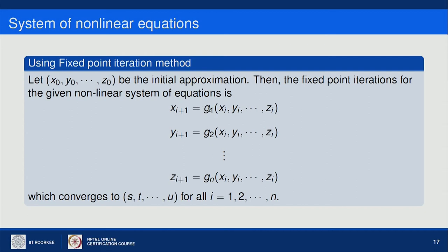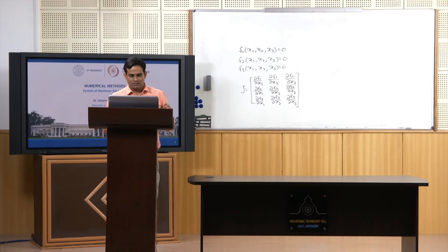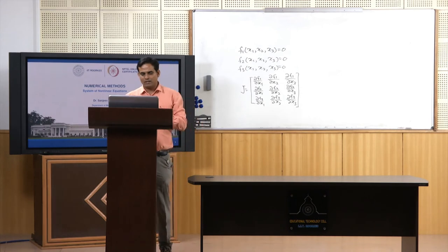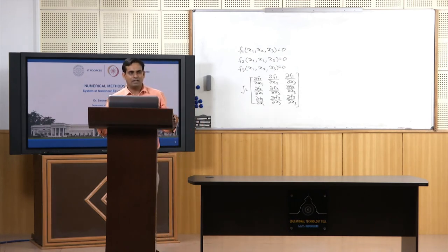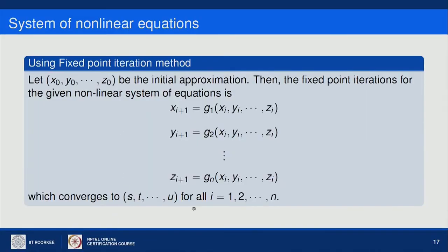The fixed point iteration scheme requires rewriting each equation fᵢ(x) = 0 as xᵢ = gᵢ(x). For example, write f₁(x) = 0 as x = g₁(x), and similarly for the other equations. The sequence xᵢ₊₁ = gᵢ(xᵢ) should converge to the numerical solution for i = 1 to n. As with the single-equation case, the choice of g is important for convergence.